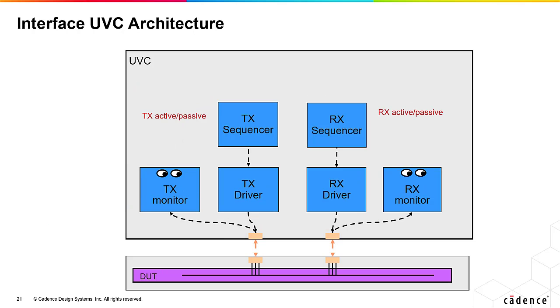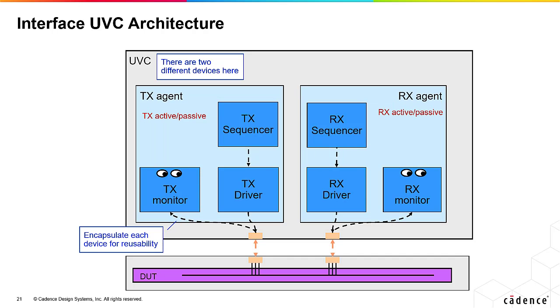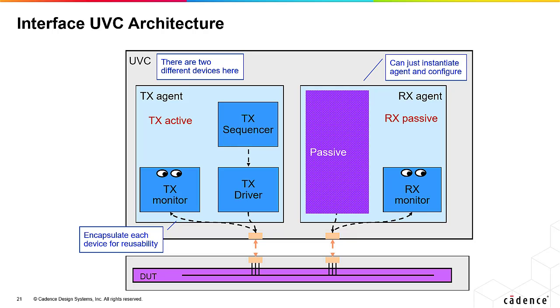So this is the architecture of an interface UVC. There are actually two devices here, a transmitter and a receiver. We can encapsulate each device with an agent. We can control the number and type of agents we need in our UVC, and we can also control whether each agent is active or passive.